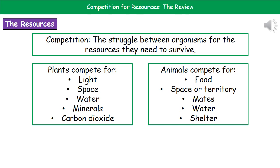Depending on which organism we're talking about, we're going to be talking about different resources that they require. If we think about plants first of all, in order to survive a plant needs light, space to grow, water, minerals, and carbon dioxide. If we compare that with animals, they will generally be competing for food, space or territory, a mate, water, and shelter.